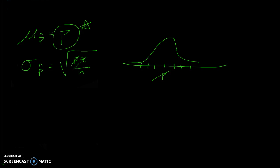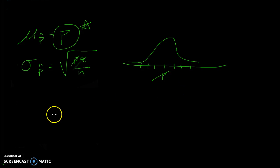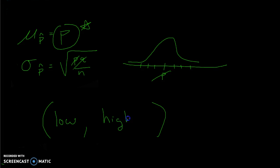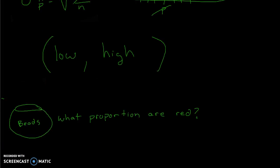So how could we find an estimate for what that true value might be? What we want to do by the end of today is learn how to build an interval — a value from a low end to a high end — and we want to be fairly confident that the true value is somewhere in that interval, from one number to another. By the end of this video, you're going to understand how to build that confidence interval.